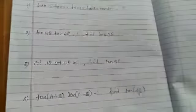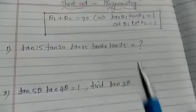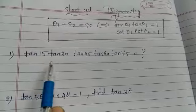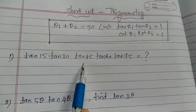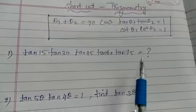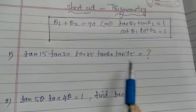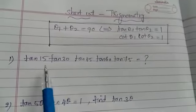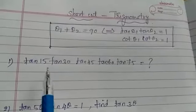Now the first problem using the shortcut: tan 15 into tan 30 into tan 45 into tan 60 into tan 75. So we multiply these. What are the angles whose sum is 90 degree?